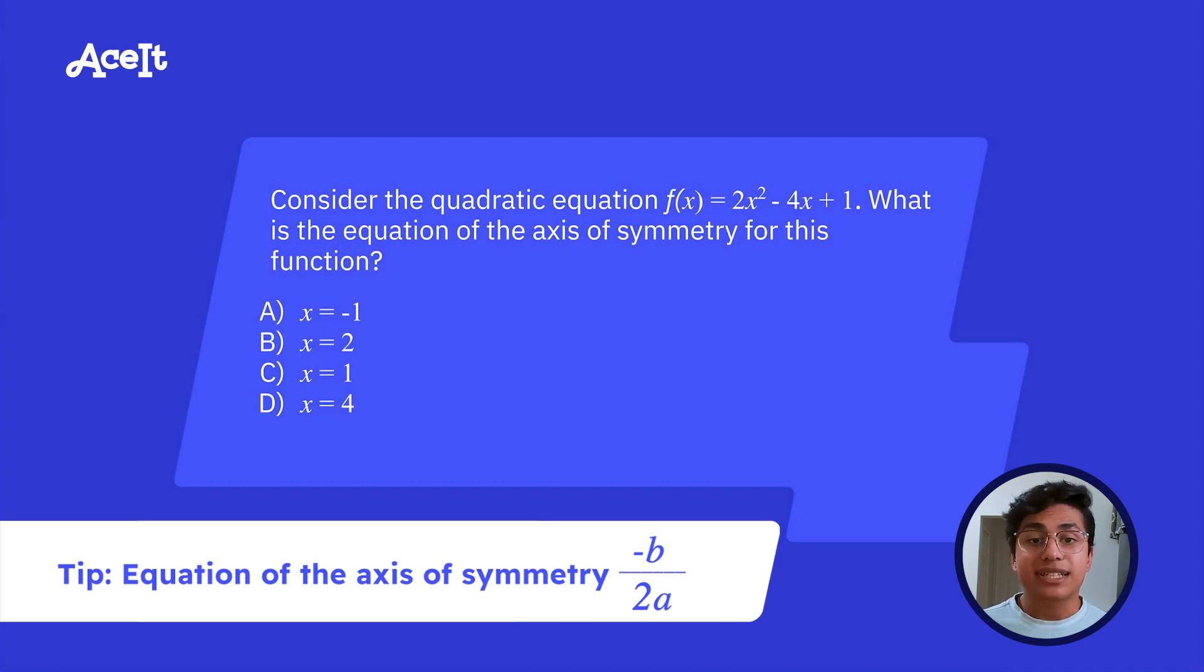So this question is asking us for the equation of the axis of symmetry for the equation f(x) = 2x² - 4x + 1. So we're going to apply the equation I talked about, -B/2A. So B is -4, so our -B would be -(-4), which is positive 4. So we're going to take that over 2 times A, which is 2 times 2 equal to 4.